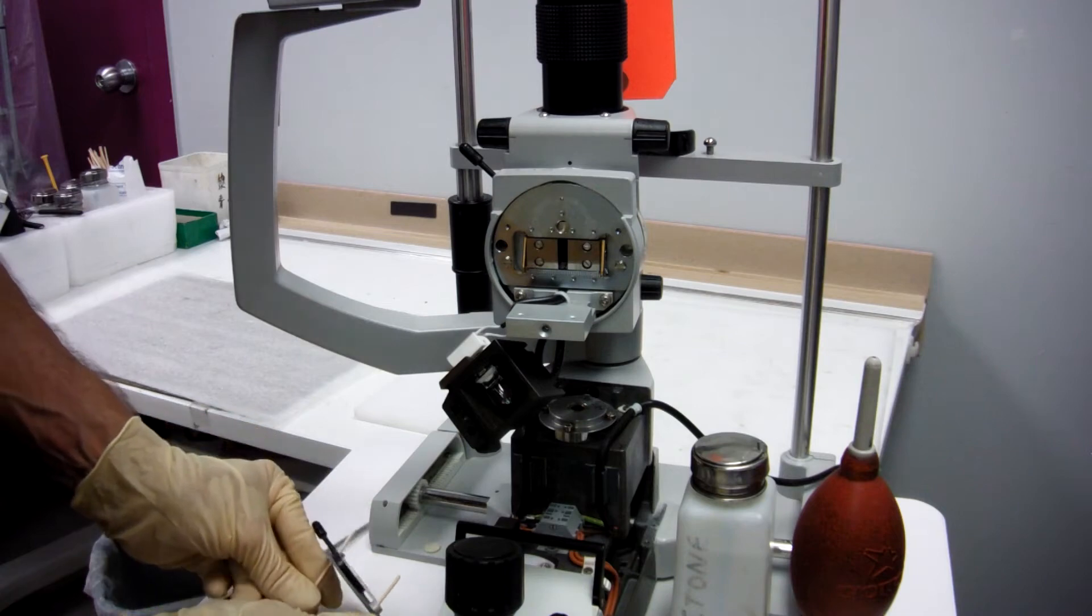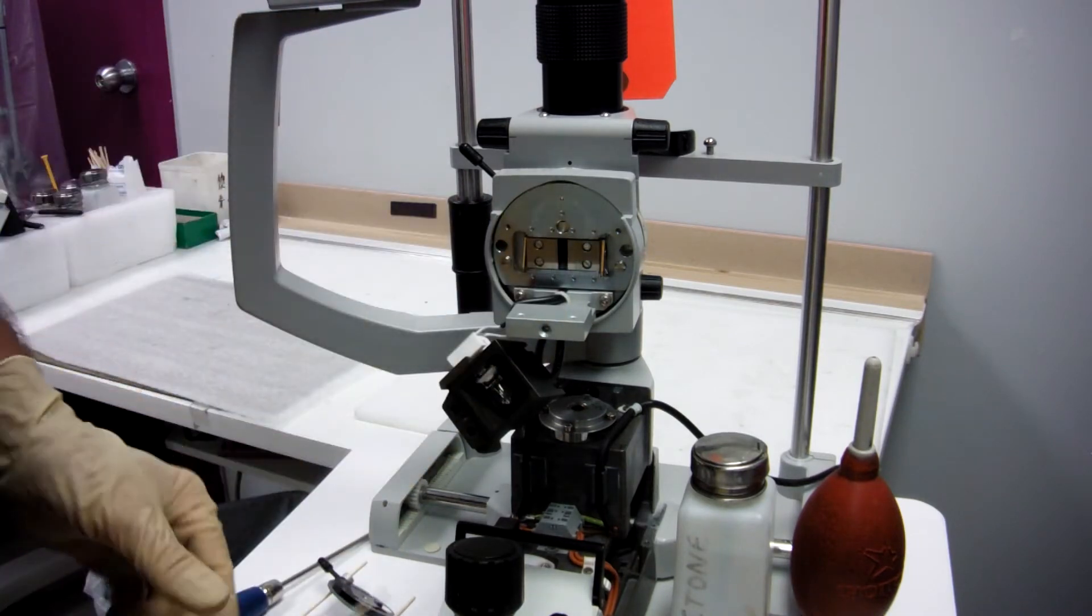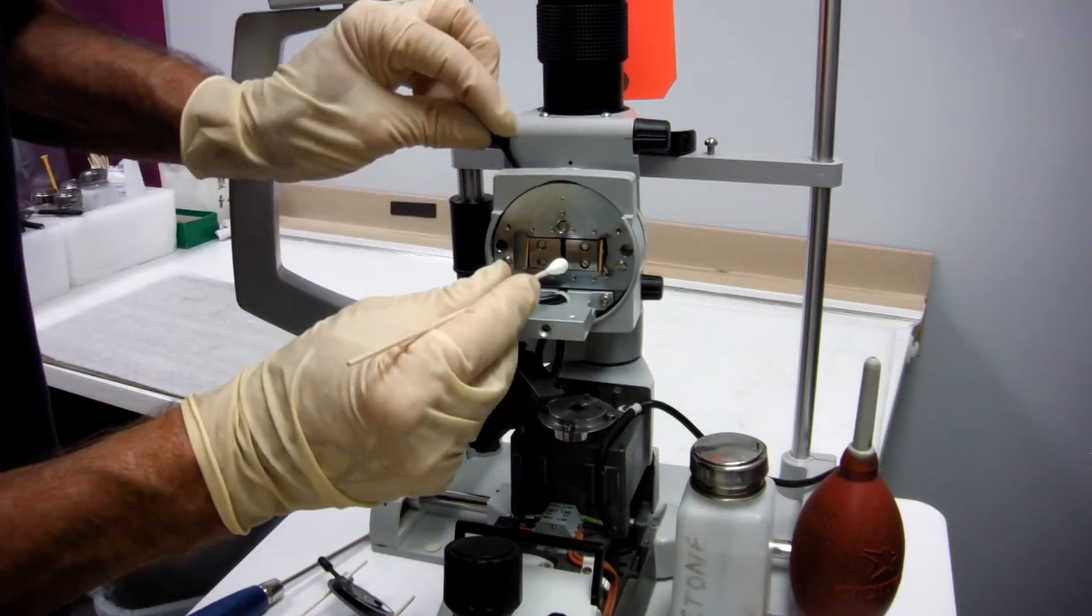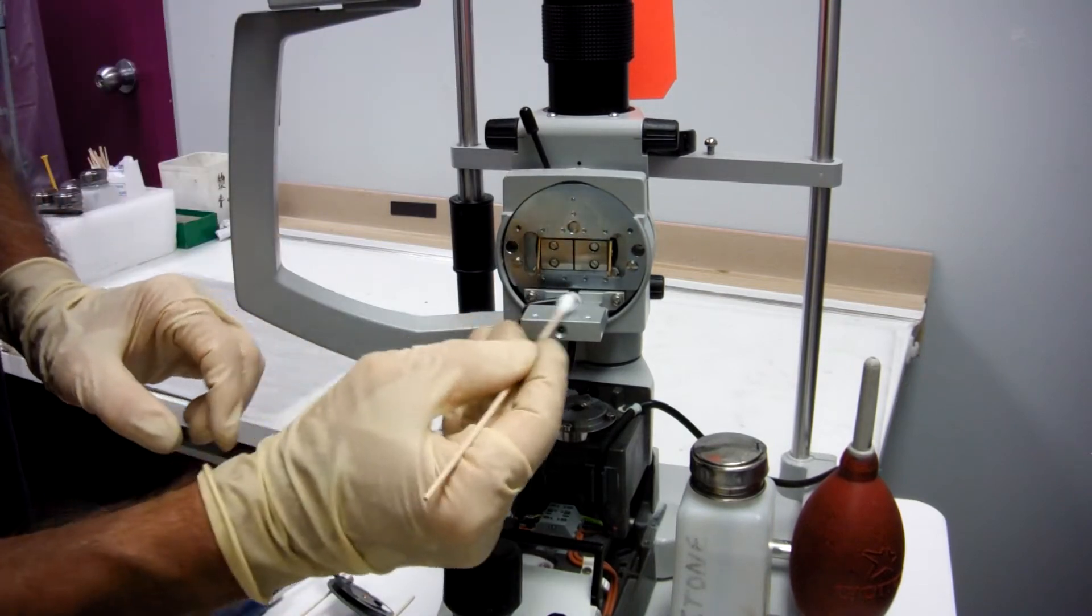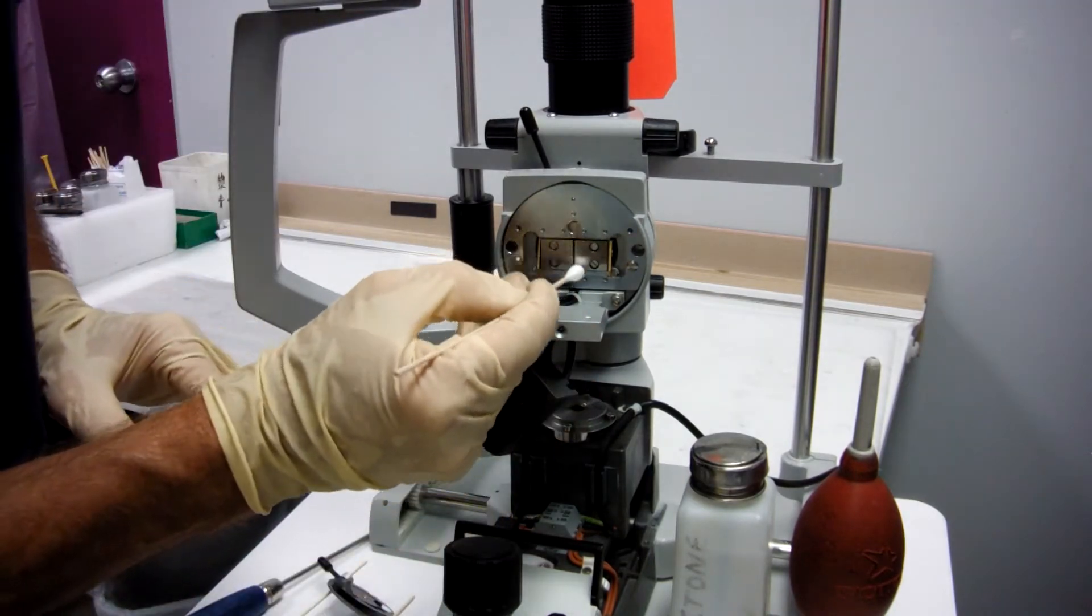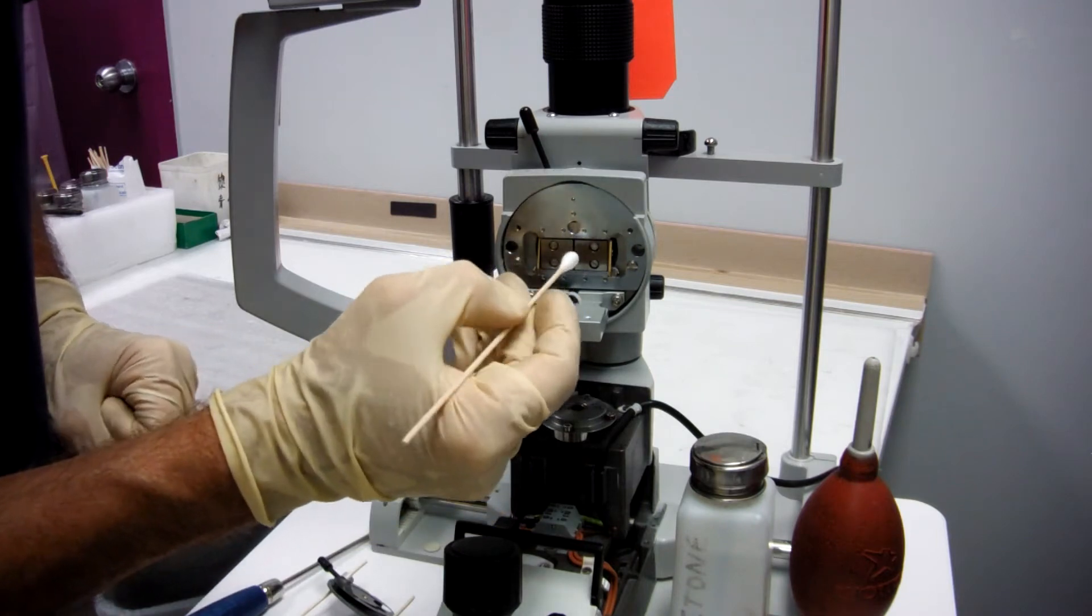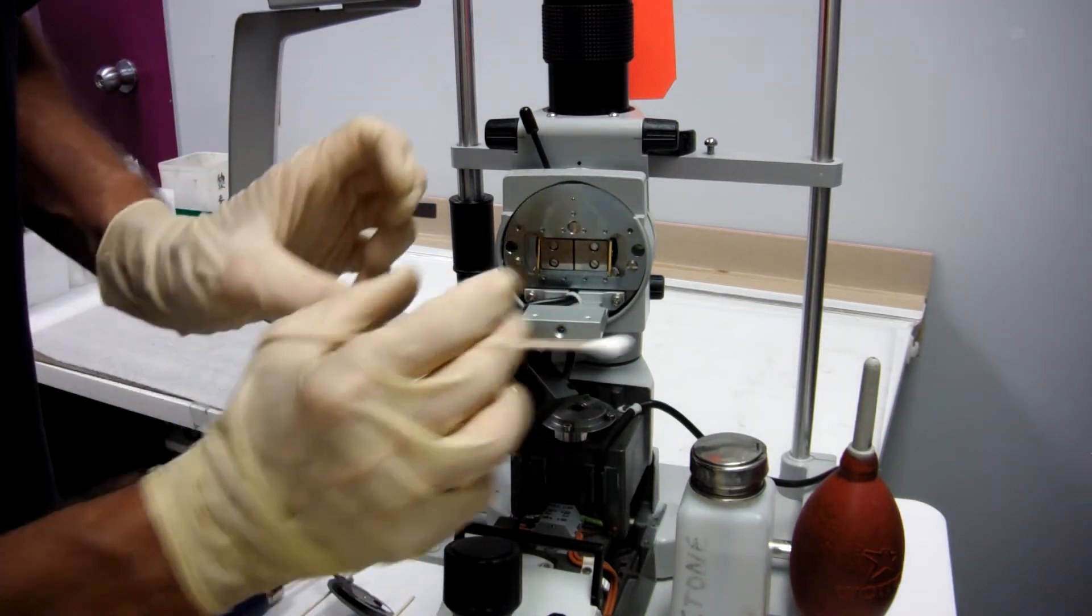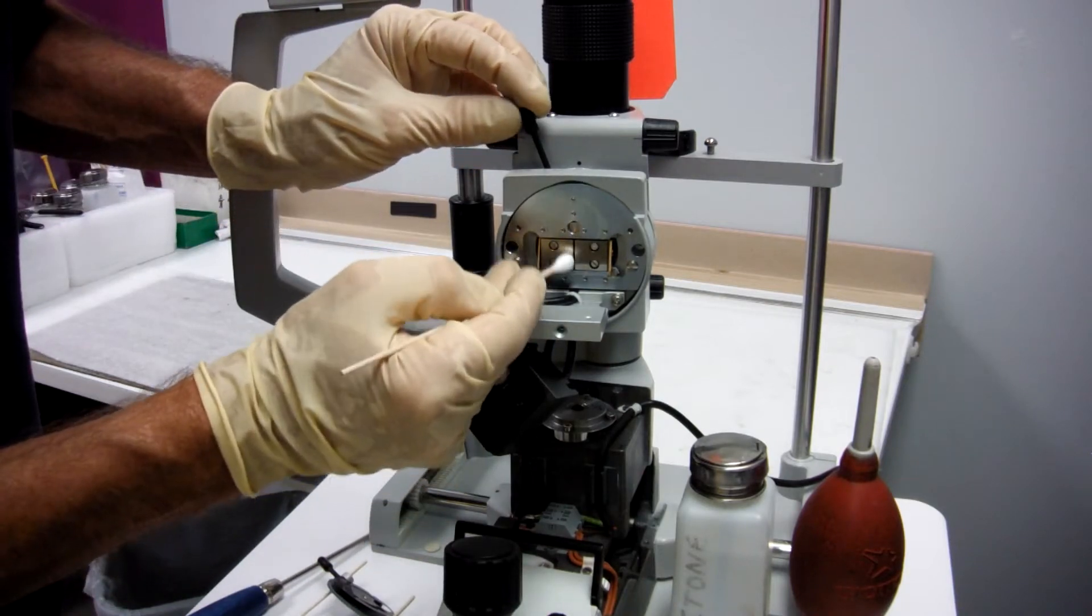But right now we're going to try to clean these slits a little better. They're not closing all the way and there wasn't enough room to get the entire surface just through the largest hole in the diaphragm. So we've taken off the diaphragm assembly so we can get to these slits all the way.